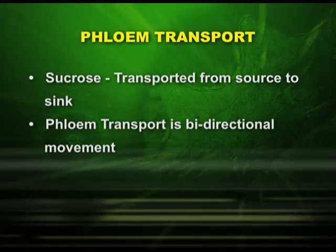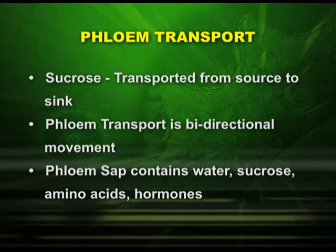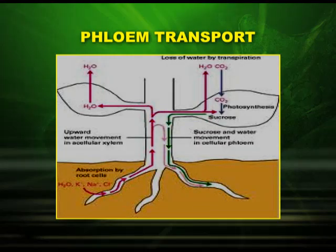Let us see what the phloem sap contains. The phloem sap contains water, sucrose, amino acids, and hormones. The bidirectional movement in the plant body can be explained in the following diagram, which shows water absorbed by roots transported to the leaf, and food prepared in the leaf by photosynthesis in the form of starch, which is converted into sucrose and transported to the various storage parts of the plant body.